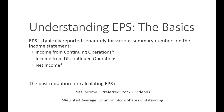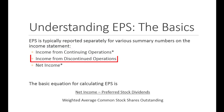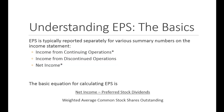According to GAAP, you must include earnings per share for income from continuing operations and for net income. You don't have to include it for discontinued operations — first because not all companies have discontinued operations, and second because those operations are going away anyway. Many companies choose to include that middle number, but it's not required. We're going to move forward and focus on the net income version, but the methods and calculations work exactly the same for the other two.